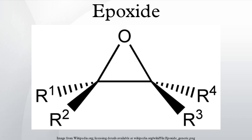An epoxide is a cyclic ether with three ring atoms. These rings approximately define an equilateral triangle, which makes it highly strained. The strained ring makes epoxides more reactive than other ethers.